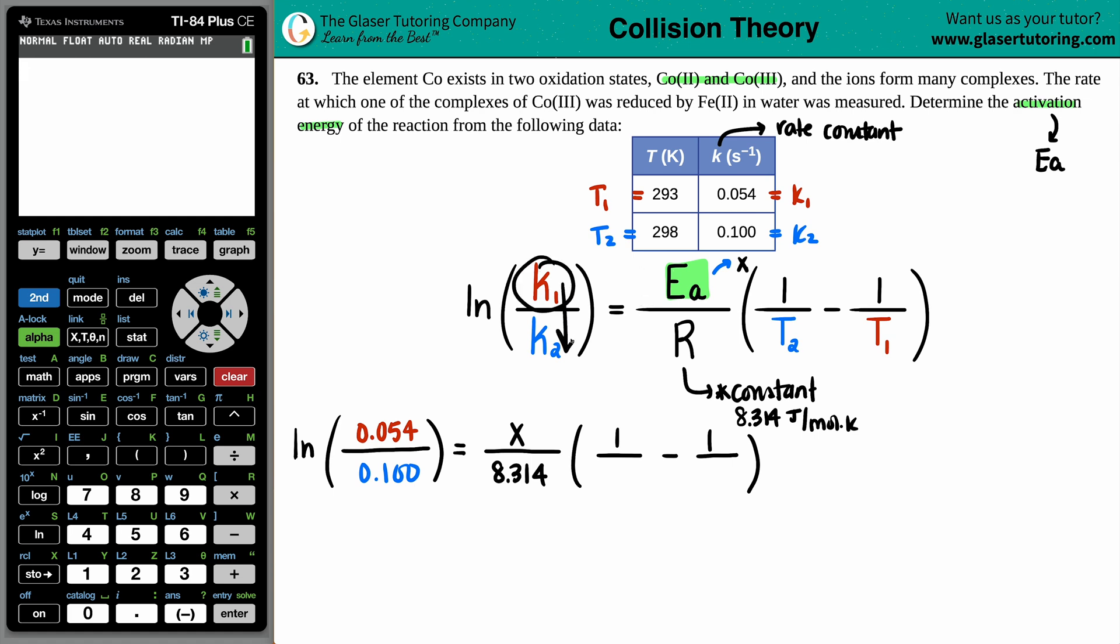When I was learning this formula, I remembered it as K1 came first and then came K2, so then it got flopped. So if I said my first K1, the second T's got to go first, so it's kind of like reversed. So now I'm going to put my 298 first, and then my 293.